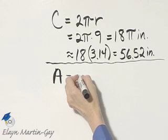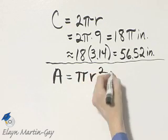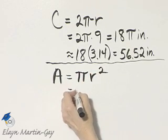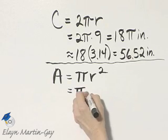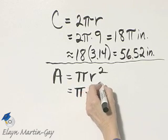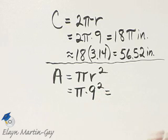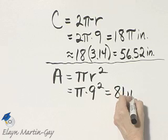And the formula for area is pi r squared. So here we have pi times, what is the radius? The radius is 9 inches. So times 9 squared. 9 squared is 9 times 9. That's 81. And 81 times pi then is 81 pi.